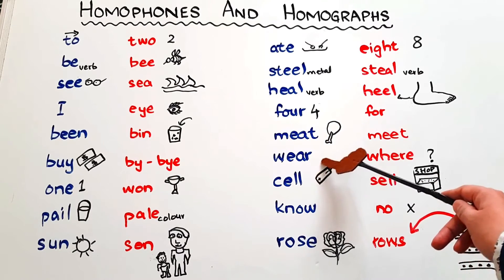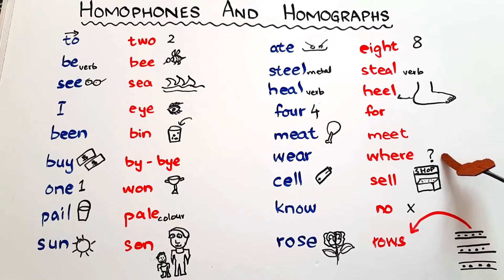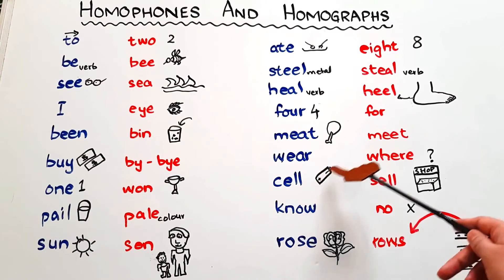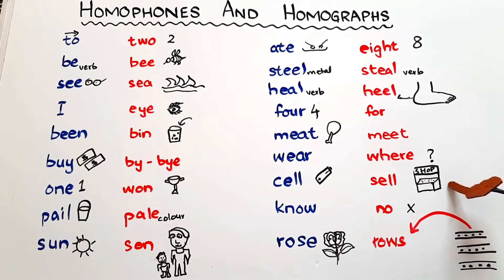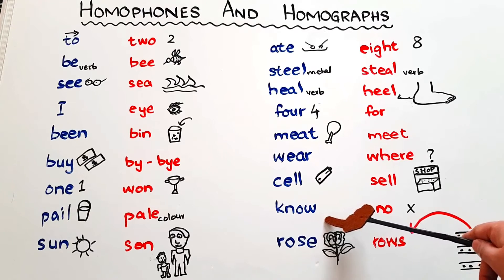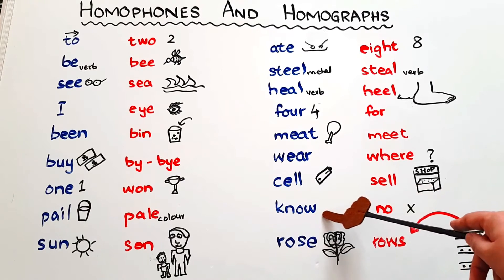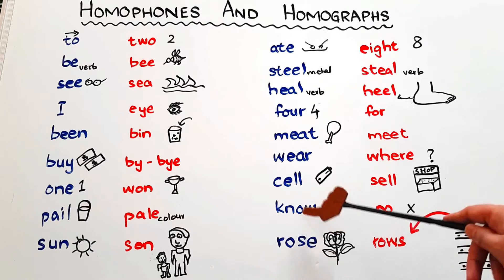'Cell', a battery cell, and 'sell' — when you sell something at a shop, as in 'I sell puppets on my stall'. Then 'know' — if you have knowledge about something, you say 'I know it' — and 'no', which you already know the meaning of.